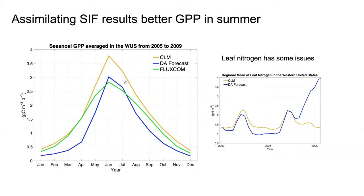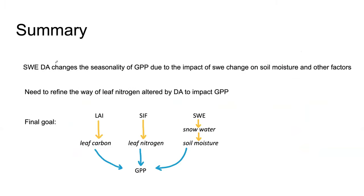As a summary: SWE data assimilation changes the seasonality of GPP through two impacts — soil moisture and other environmental factors such as temperature. For SIF, we still have some modifications to make to refine the way leaf nitrogen is altered. Our final goal is to use the satellite observations of LAI, SIF, and SWE together to improve GPP.